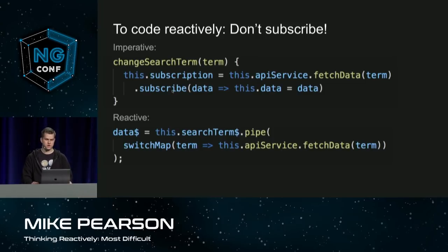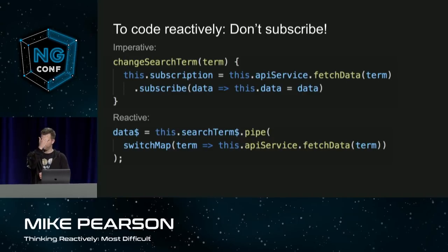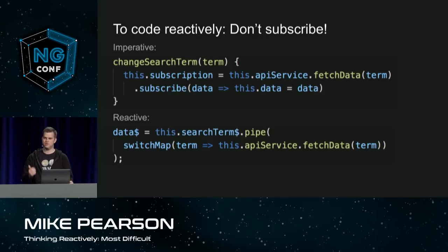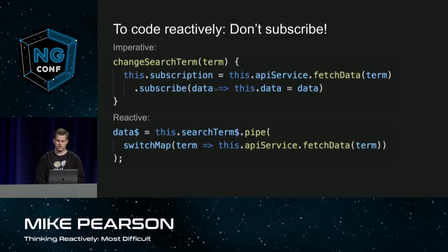Theoretically, you shouldn't ever have to manually subscribe. I like the approach of letting the AsyncPipe handle it all, because nothing really happens in your app unless a consumer is interested in it, like the user. And nothing is really being calculated unless it's going to be displayed — eventually the user is going to see it, so it's going to end up in the template. If you're just connecting from sources to sinks with observable chains composing each other all the way down, that subscription the AsyncPipe automatically does should propagate all the way up through your code. You can have reactive streams and never need to subscribe manually.